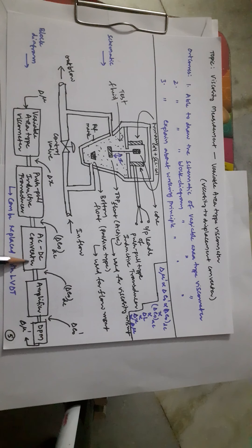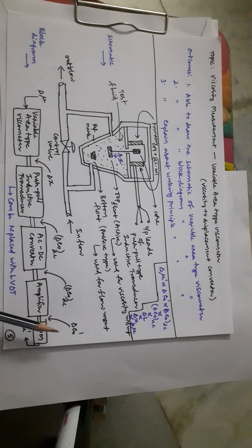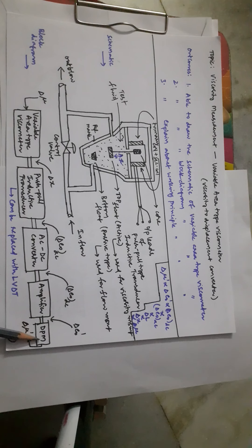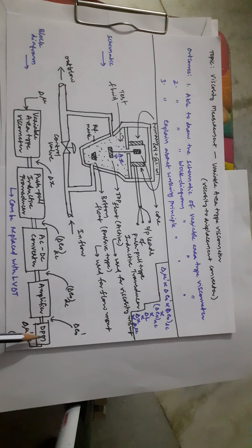The AC output voltage from the push-pull or LVDT transducer must be converted to DC using an AC-to-DC converter or phase-sensitive demodulator. This stable DC voltage is then amplified using an amplifier to give an output delta E₀', which is displayed on a digital panel meter. The panel meter displays voltage values calibrated in terms of viscosity, represented as delta mu dash.